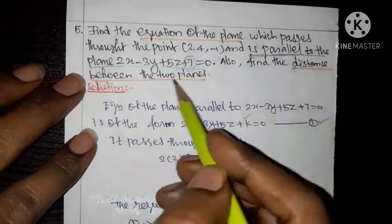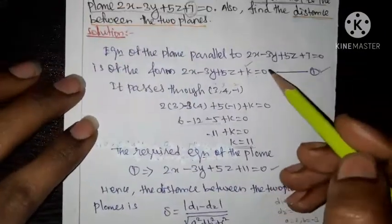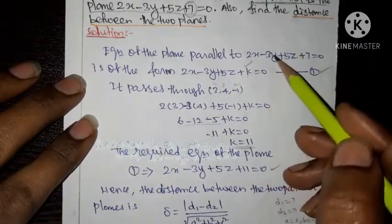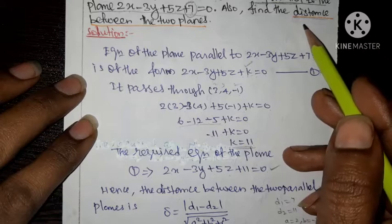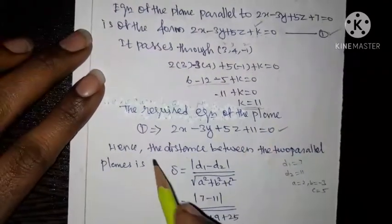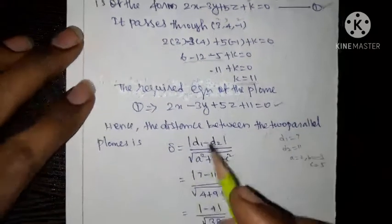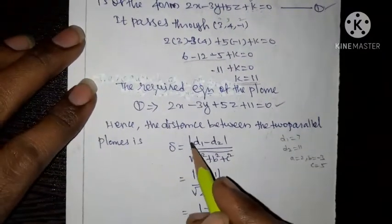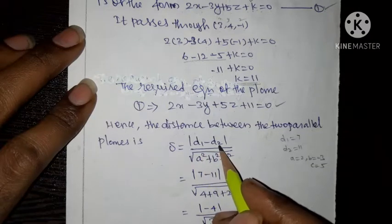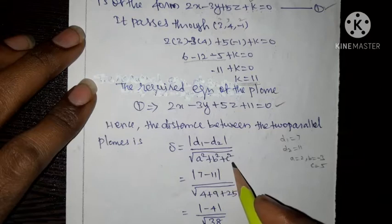Next, we find the distance between the two parallel planes. The formula for the distance between two parallel planes is delta equal to modulus of d1 minus d2, divided by the square root of a squared plus b squared plus c squared.